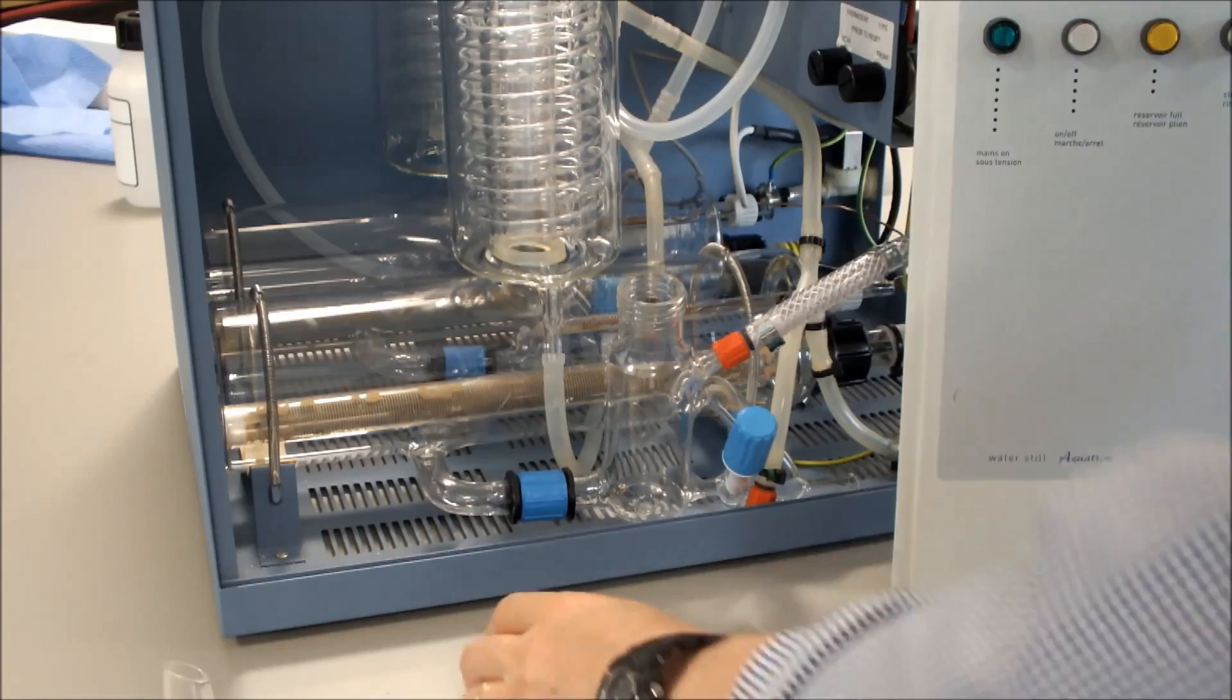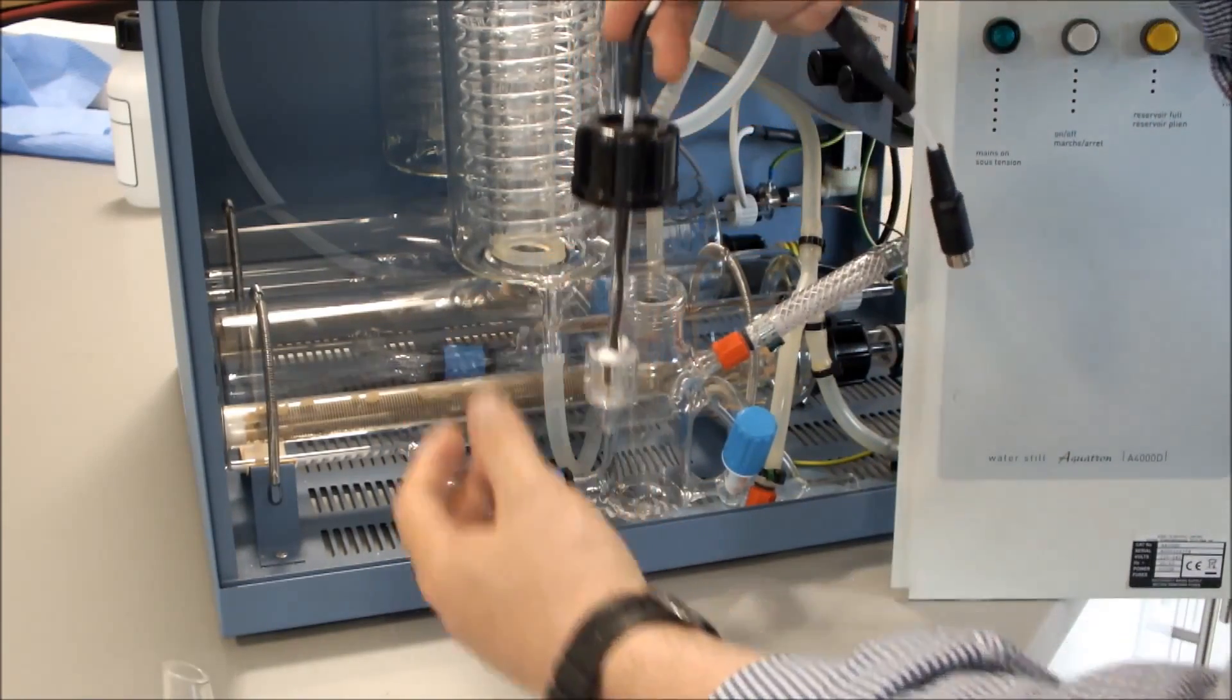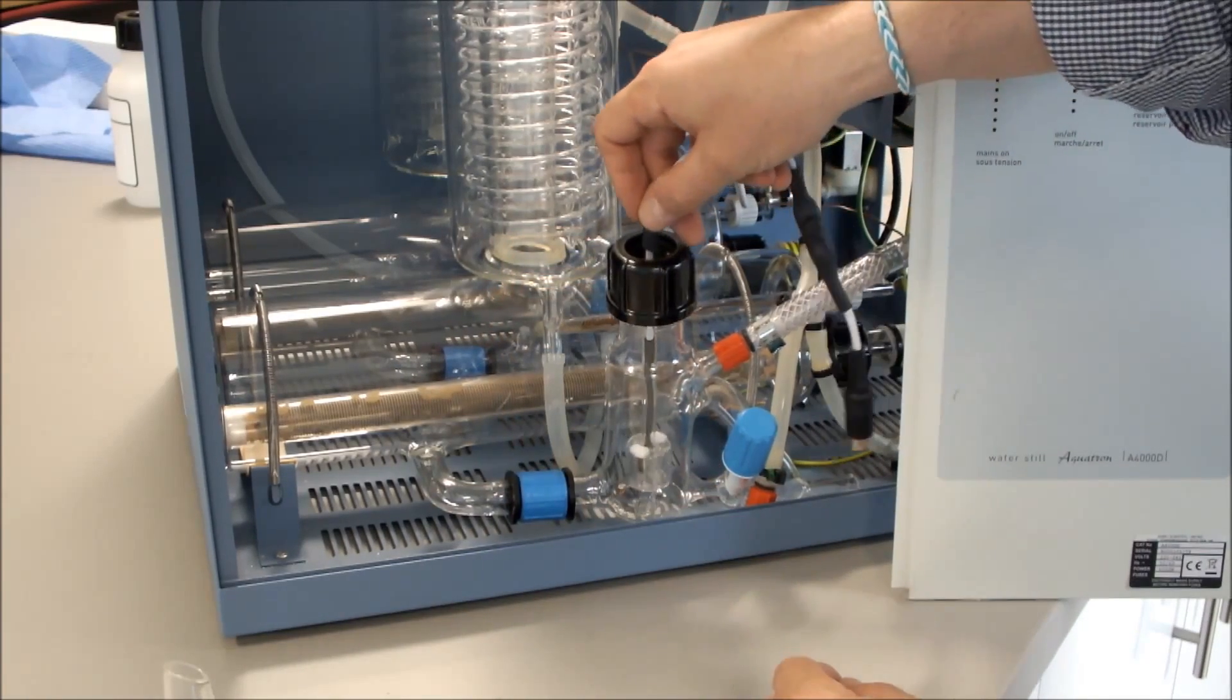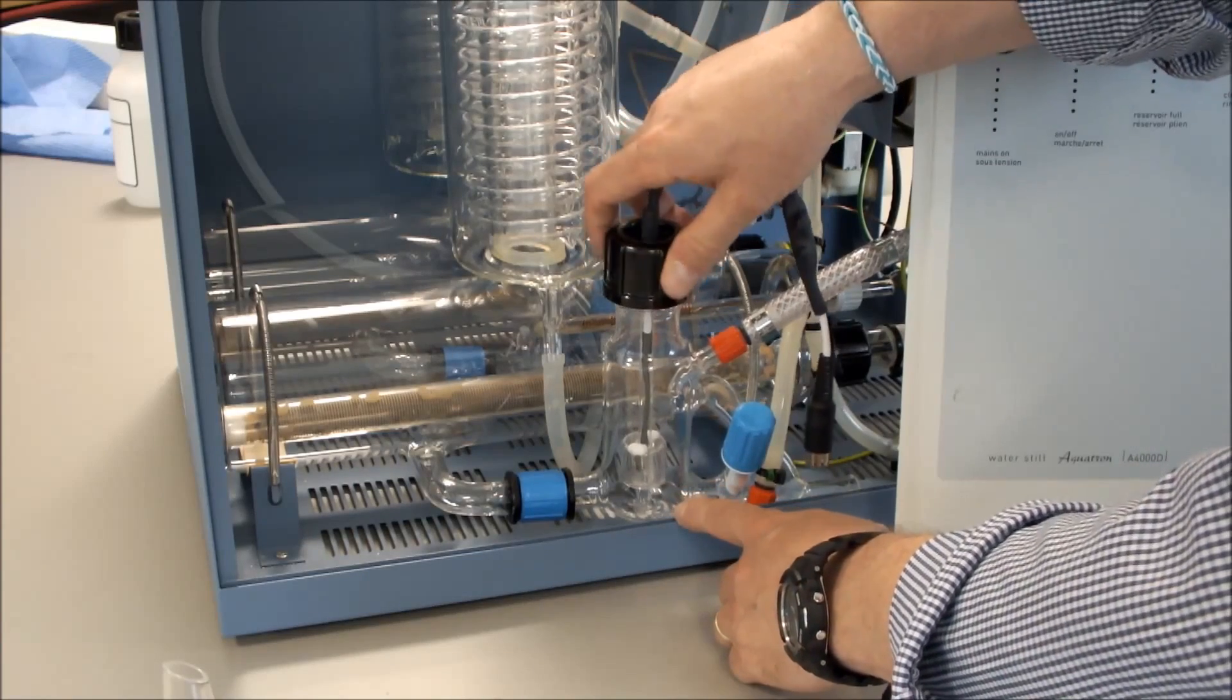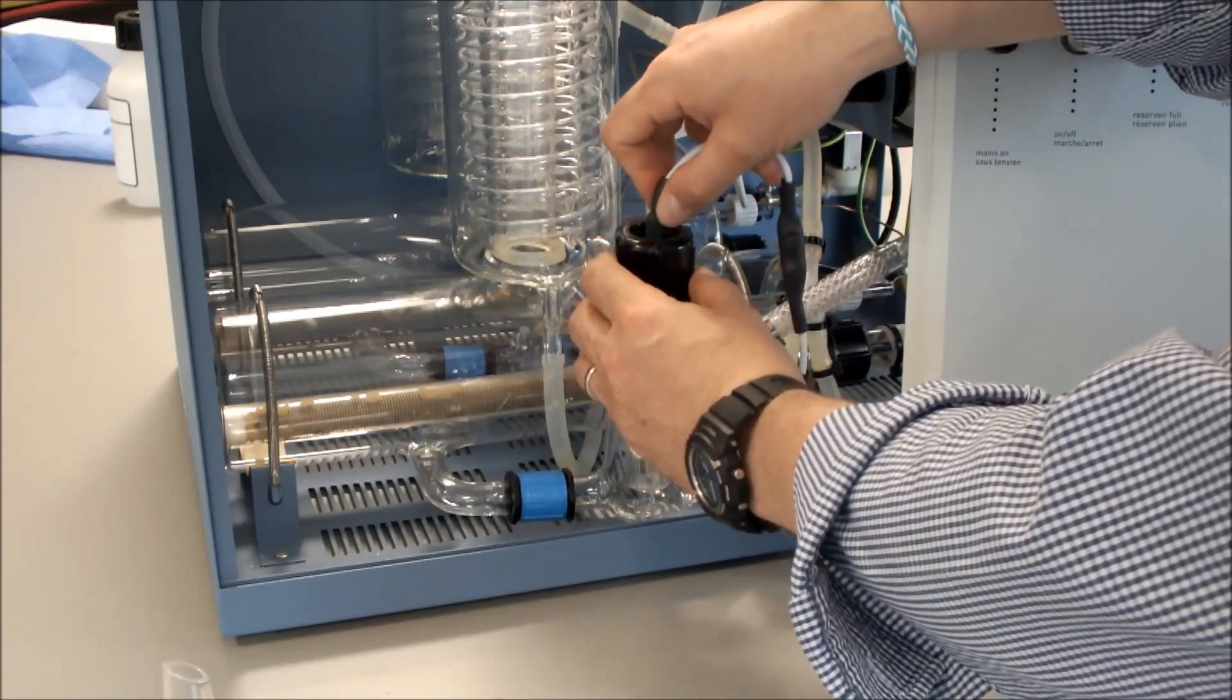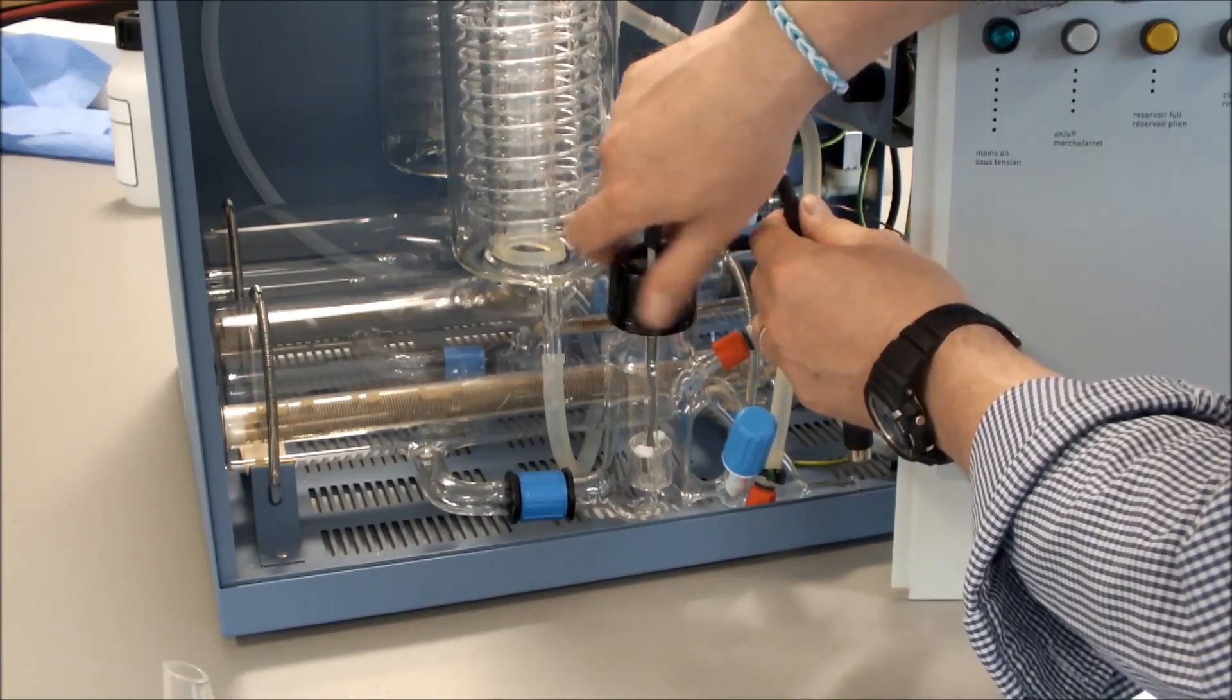We then fit the black cap onto our float assembly which comes complete with seal. The float assembly fits like so. At the bottom of the boiler control there's a cutout where the bottom of the float assembly actually fits. We can then tighten up the black cap.